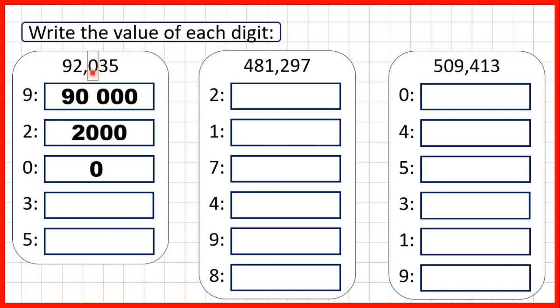If we didn't have a 0 in our hundreds, the 2 wouldn't be in our thousands, and the 9 wouldn't be in our ten thousands. But zeros don't have any value in themselves. We have 3 in our tens, so that's 30, and the 5 in our ones just stands for 5.